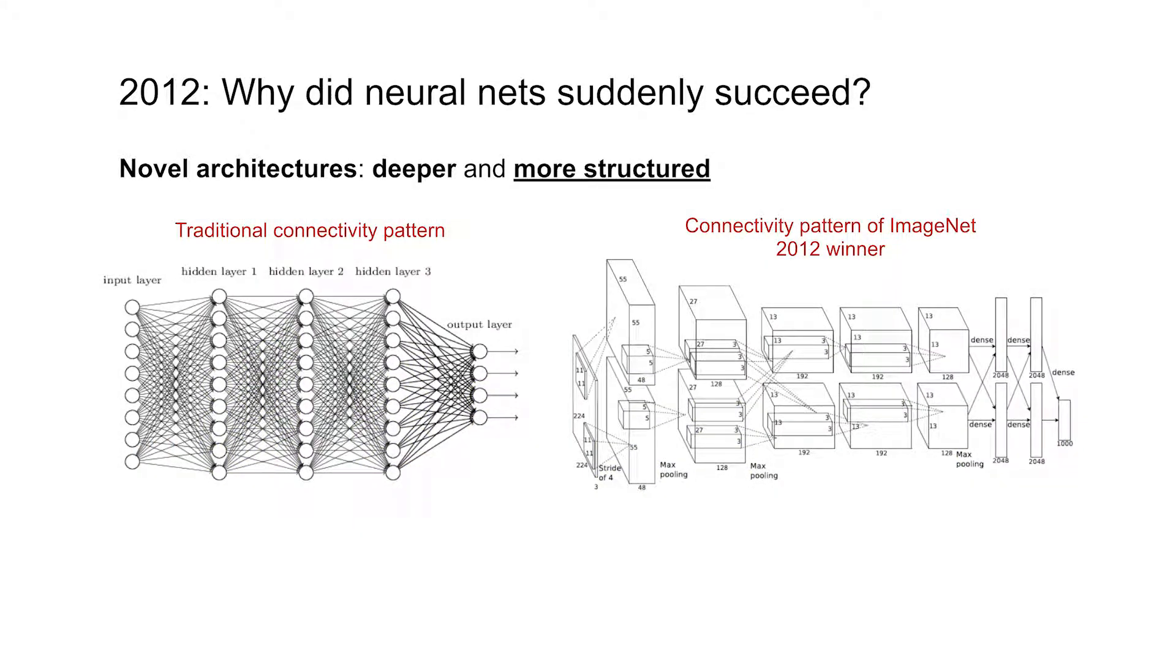The other thing that was different between more recent deep network architectures and more traditional approaches in neural networks was that many of the deep learning architectures have a lot more structure. So here on the screen, on the left-hand side, you see a more traditional neural network. Even though it has many hidden layers, you see essentially all the neurons in one layer are connected to all the neurons in the next layer.